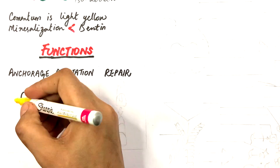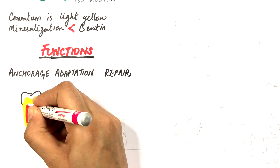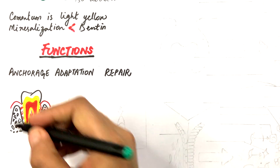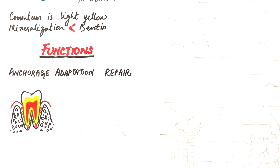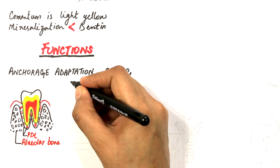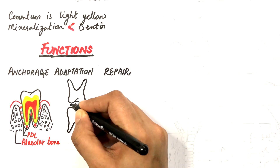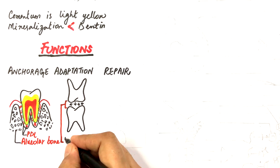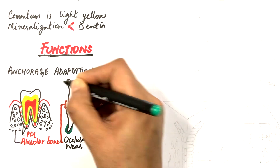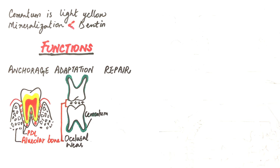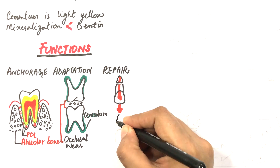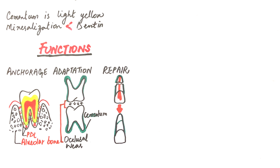Anchorage is considered the primary function of cementum. It serves as a medium for the attachment of PDL fibers, hence binding the tooth to the alveolar bone. It helps in the adaptation of the tooth to occlusal wear by deposition of cementum at the apex of the root. And it serves as a major reparative tissue in case of root fractures or root resorptions.